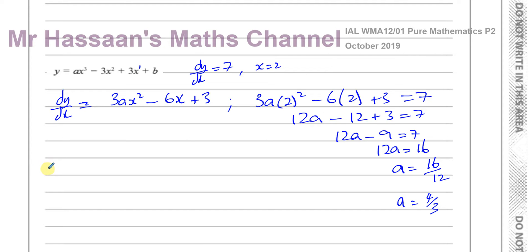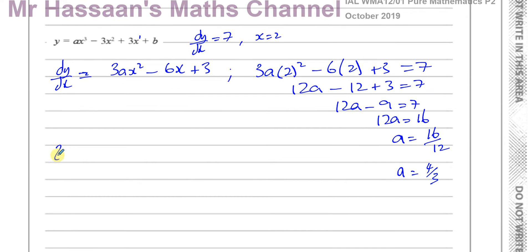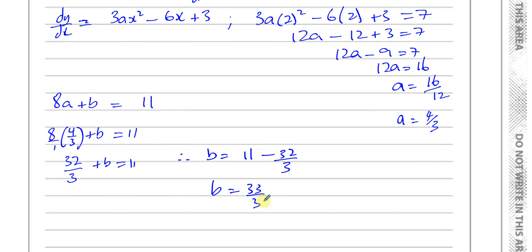So we know A equals 4 over 3. And we also know that 8A plus B equals 11. So we can now find what B is by substituting A as 4 over 3. So we can say that 8 times 4 is 32 over 3, plus B equals 11. Therefore, B is equal to 11 minus 32 over 3, which is going to give you 33 over 3 minus 32 over 3, which is 1 over 3. So we say A is 4 over 3 and B is 1 third.